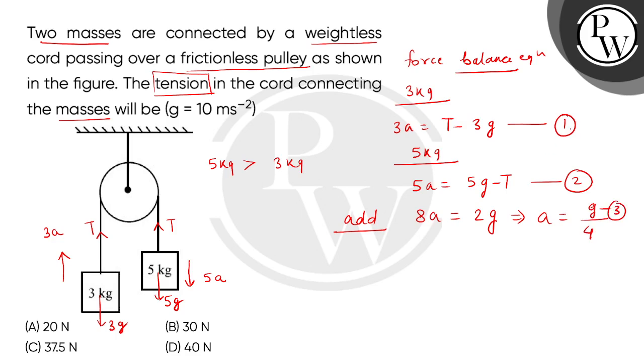Now we will put the acceleration value in equation number 1. This gives us T equals 3 multiplied by 5G divided by 4.